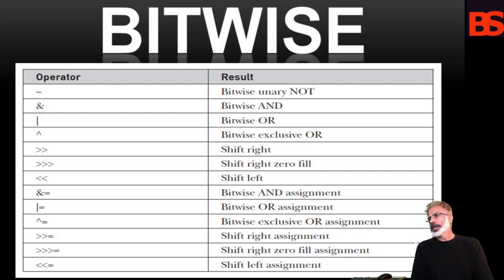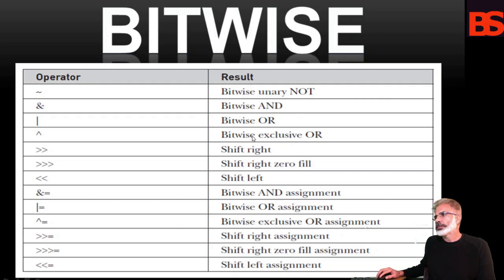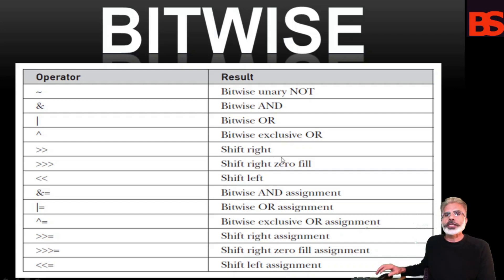They are summarized in the table you can see on the screen. The first one is bitwise unary NOT, then bitwise AND, bitwise OR, bitwise exclusive OR, shift right, shift left, and so on — you can see on the screen.